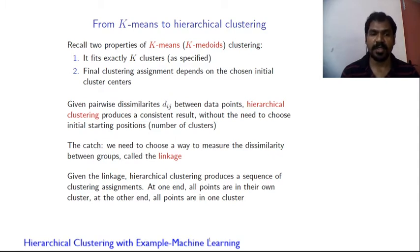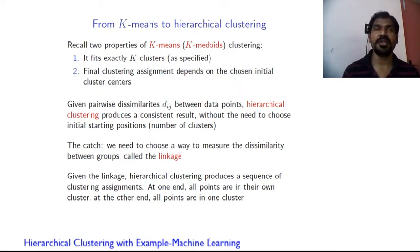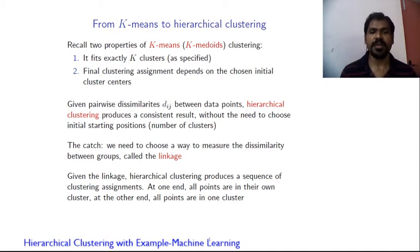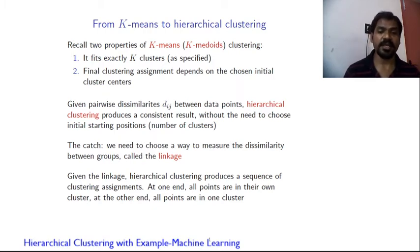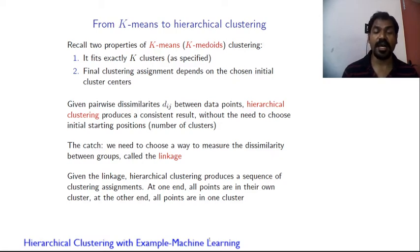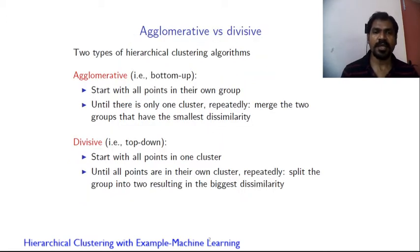Given pairwise dissimilarities between data points, hierarchical clustering produces a consistent result without needing to choose initial starting positions like number of clusters. All data points start as their own clusters and may end in one cluster. We need to choose a way to measure dissimilarity between groups, called the linkage. Given the linkage, hierarchical clustering produces a sequence of clustering assignments.